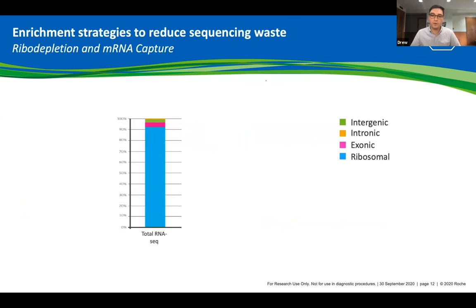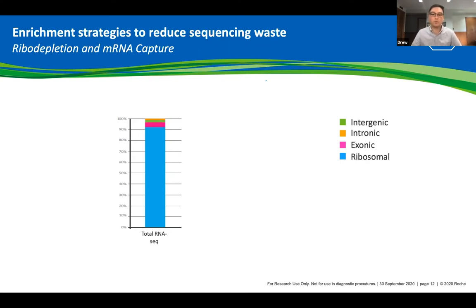Looking at the breakdown of different regions of RNA samples: if you were to sequence a total RNA-seq library without any upfront enrichment, over 90% of the reads would map to ribosomal RNA, as seen in the two abundant peaks on electrophoretic traces. The remaining 10% is divided between intergenic, intronic, and exonic RNA content. Because ribosomal RNA is generally not of biological interest, over 90% of sequencing capacity is wasted. One way to improve throughput is to remove the undesirable ribosomal species prior to library preparation through RNA enrichment methods.